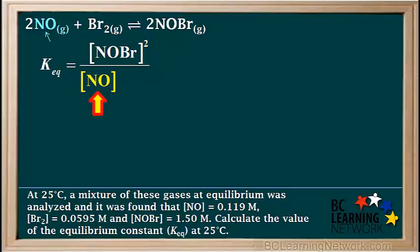NO is a reactant, so we write the concentration of NO on the bottom, and again NO has a coefficient of 2, so we write the exponent 2 on the concentration of NO.